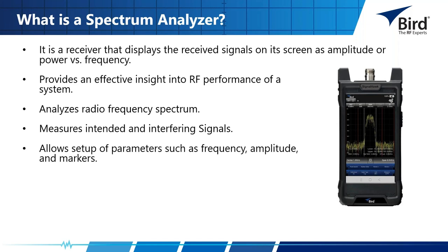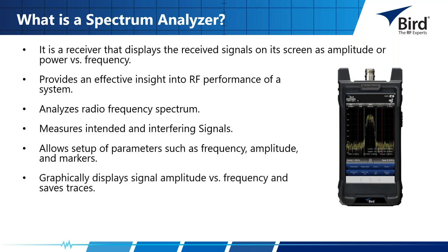The spectrum analyzer allows setup of parameters such as frequency and amplitude, and allows you to set up markers to help identify what you are seeing. It graphically displays signal amplitude versus frequency and will also allow you to save your traces. It can be a portable or standalone bench instrument.